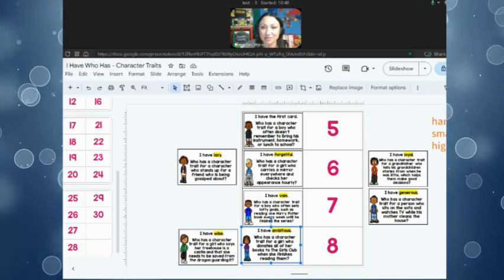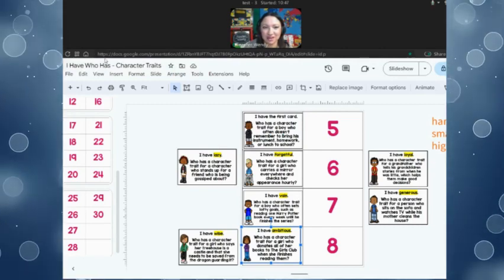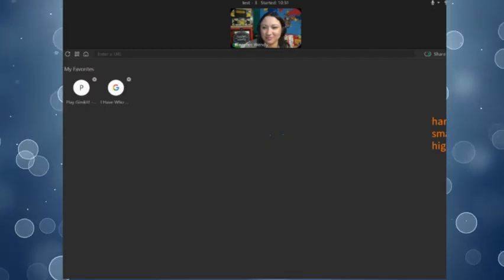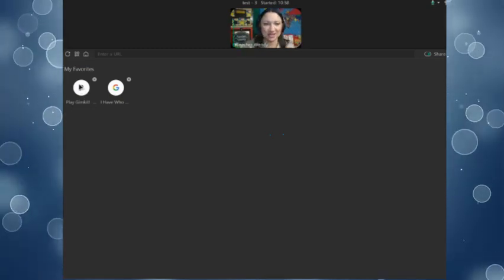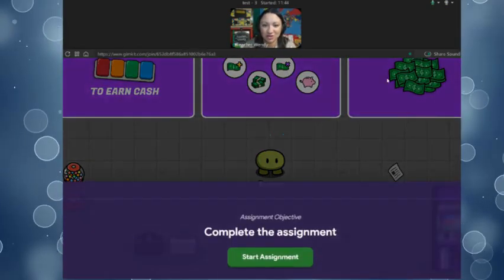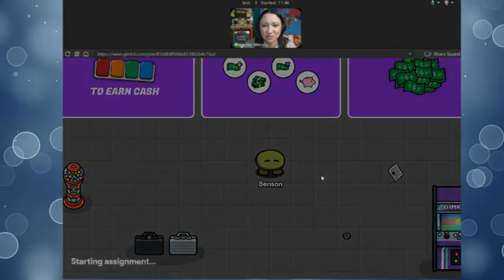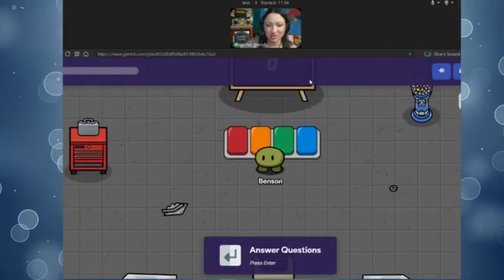After we finish this game, I just want to show you what we have for the very end of our time together. All right. At the end of our time together, we would play GimKit. So I'm just going to skip ahead a little bit. And again, we're going to review those character traits. Let's work together here. We could also do breakout rooms and do it individually.